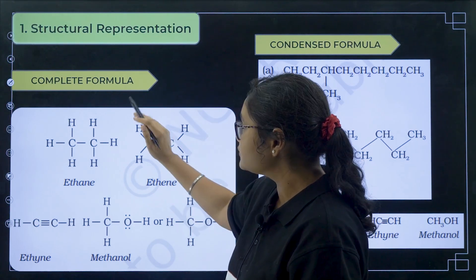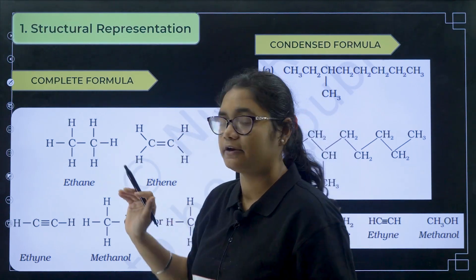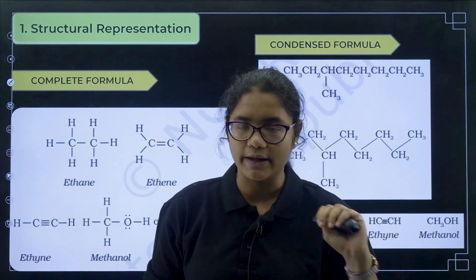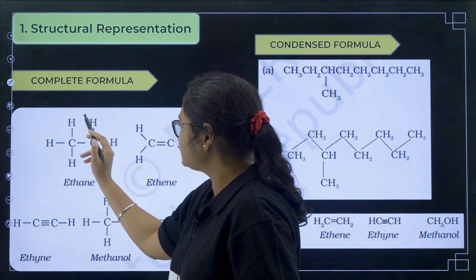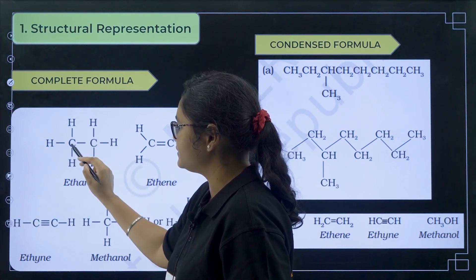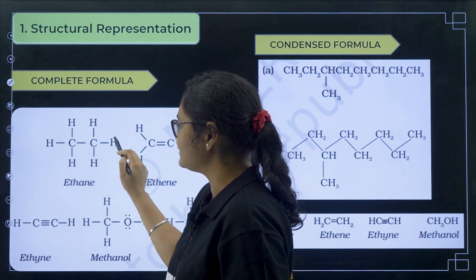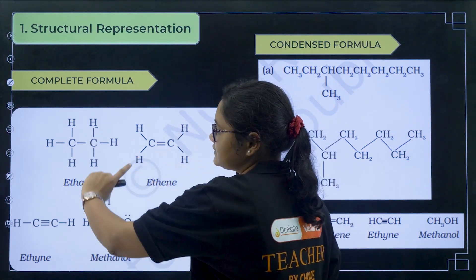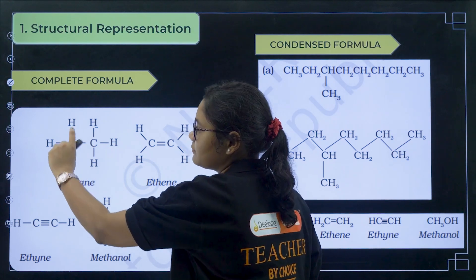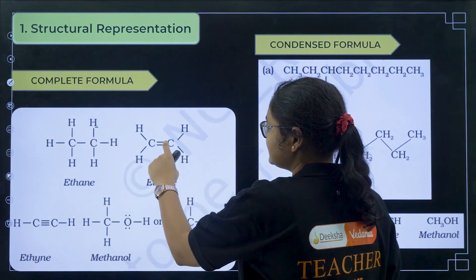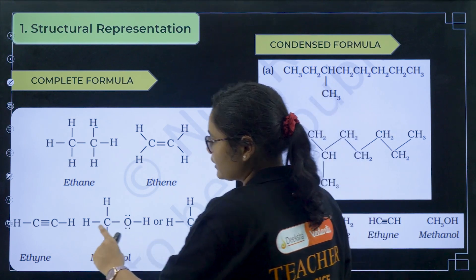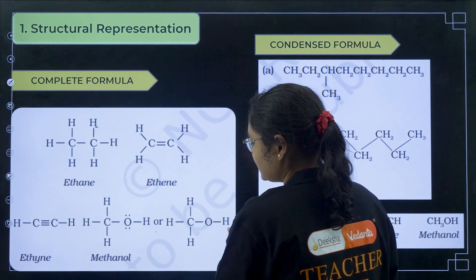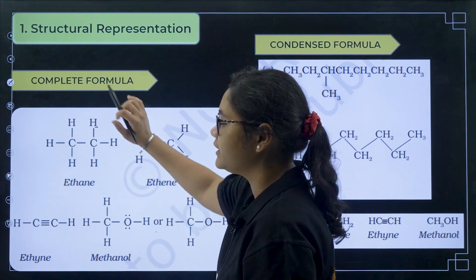Complete formula means when you represent all the bonds of carbon. You should remember one very important thing: every carbon can form only four bonds. Suppose carbon is forming bonds with hydrogen — you can see this carbon has four bonds, and this carbon also has four bonds. When you are representing all the bonds of carbon, it is called complete formula. Here you can see CH, CH double bond; C triple bond, CH, CH — when you represent all the bonds, that is called complete formula.